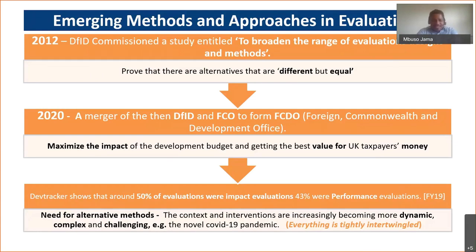Looking at 2019–2020 evaluations across the DevTracker, 50% were impact evaluations and 43% were performance evaluations, with just a small percentage focused on processes. With the advent of COVID-19, the context has tremendously changed — it's getting more complex and everything is tightly intertwined. Continuing to do causal inferences is getting even more difficult. It's a task now for evaluators to try to understand what sort of impact we made and how we arrived at that.